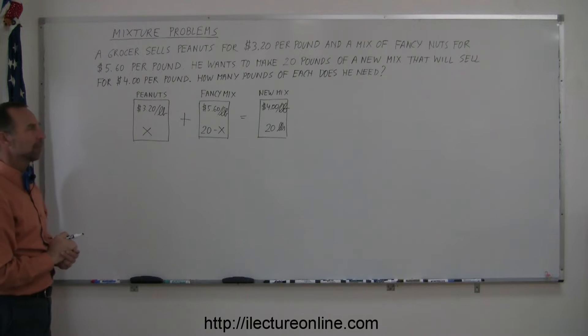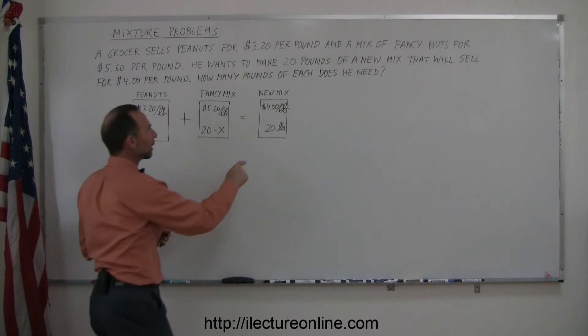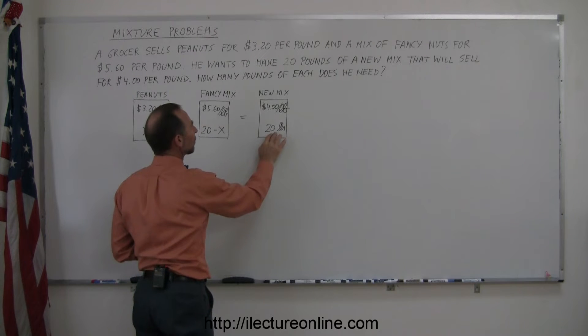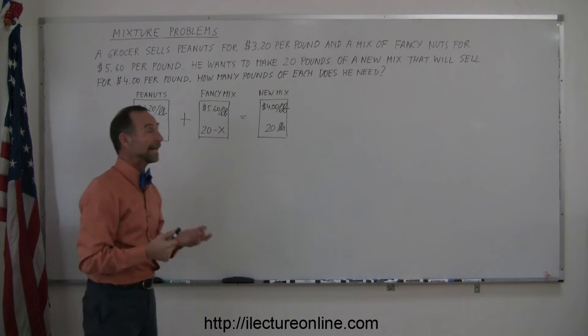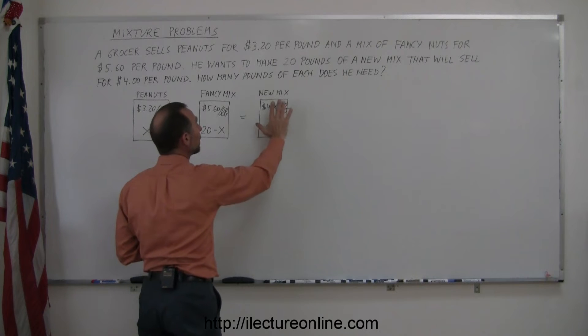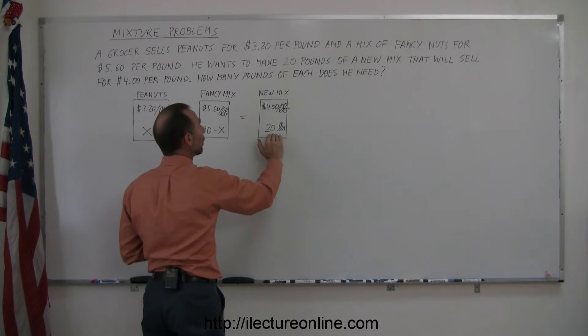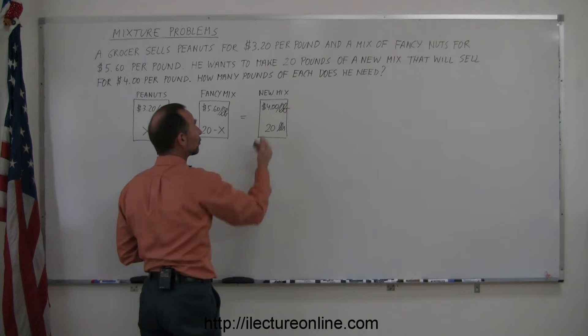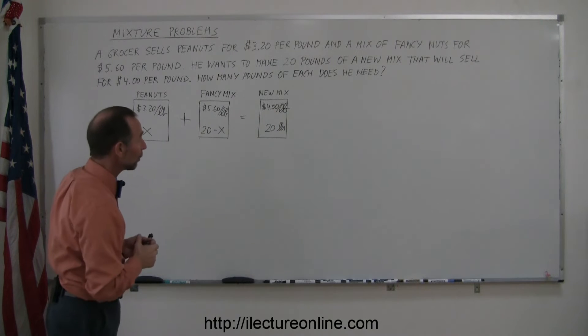Now, how do you solve that? Notice if you multiply these two together, 20 pounds times $4 per pound, the pounds will cancel out. You'll end up with 20 times 4 or $80. That will be the total value of the new mix.